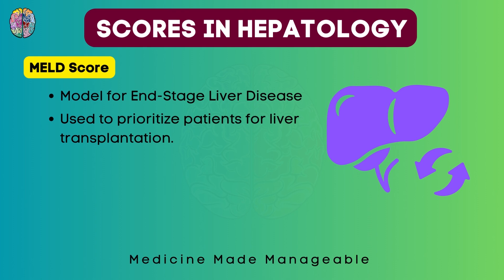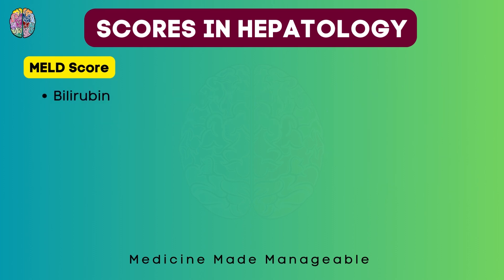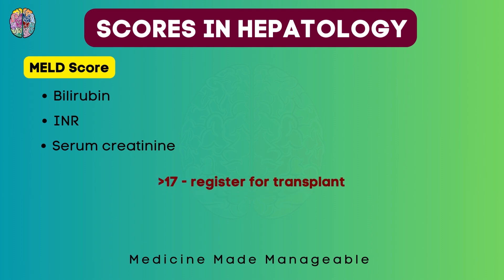First we have to look at the components in this score. I've tried to arrange all of these components across all the scores in a way that is going to help you remember. There are two things that are common in all the scores: bilirubin and INR. Apart from this, in the MELD score we also check the serum creatinine. If the score is more than 17, we will register the patient for liver transplantation.